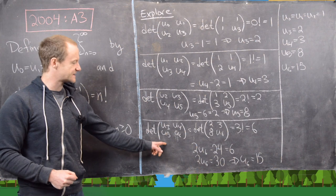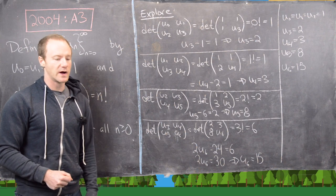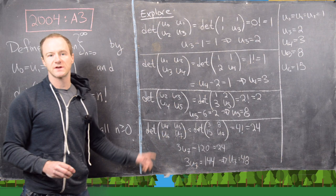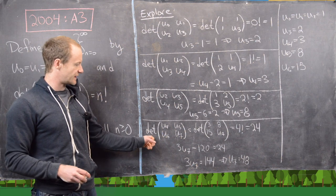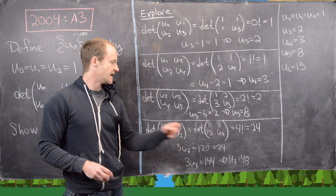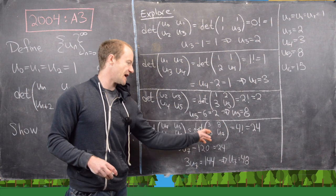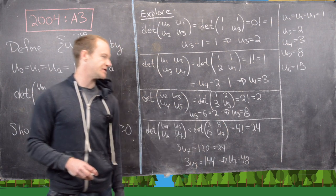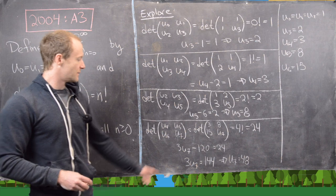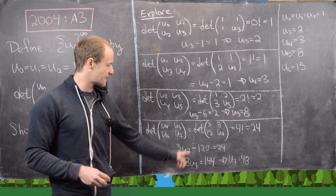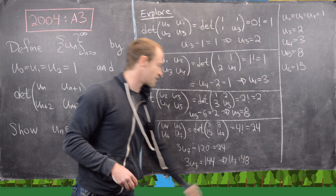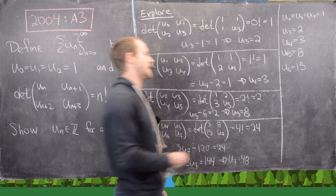Let's look at what happens for u_7. The determinant of [u_4, u_5; u_6, u_7] equals the determinant of [3, 8; 15, u_7], and we want that to equal 4 factorial = 24. That gives 3u_7 − 120 = 24, so u_7 = 48.